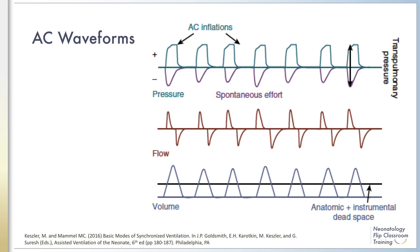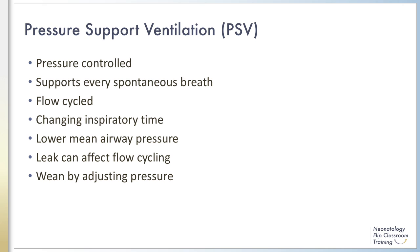Pressure Support Ventilation (PSV) is a pressure-controlled mode that supports every breath, similar to assist control. The key difference is that PSV is flow-cycled rather than time-cycled. An inflation is terminated when inspiratory flow declines to approximately 15% of peak flow. This eliminates the infant trying to expire against a high positive inflation or a long inspiratory time. Inspiratory time is automatically adjusted based on changing lung mechanics and is typically shorter in PSV compared to AC, which can lead to lower mean airway pressure.